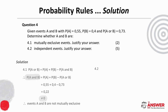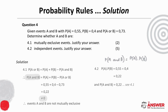For 4.2, in order to prove events are independent, we need to prove that P(A and B) is equal to the product of their individual probabilities. So we find the product of the individual probabilities, then compare it to the value we found in 4.1. We can see that they are equal, and so we can conclude that events A and B are independent.